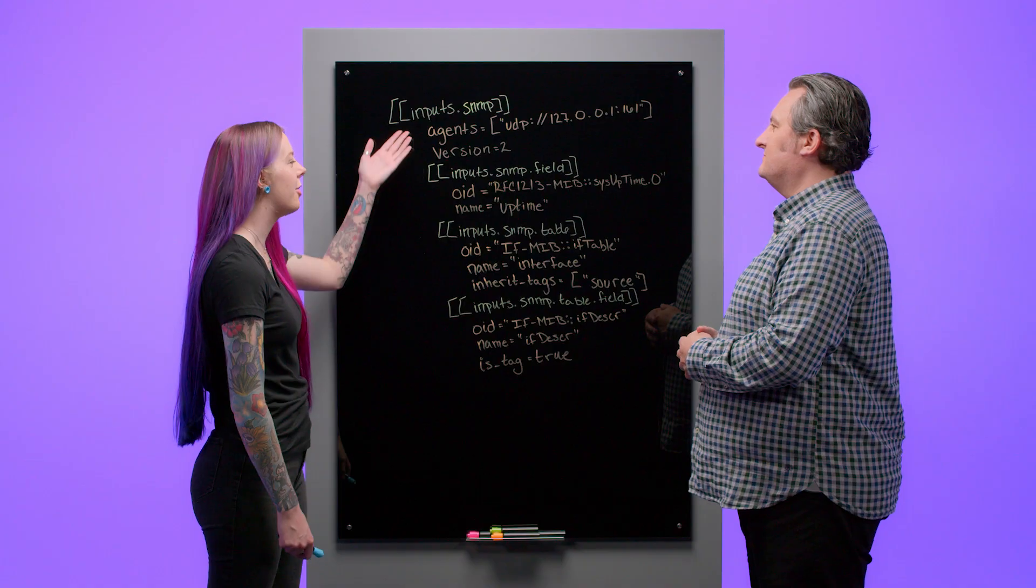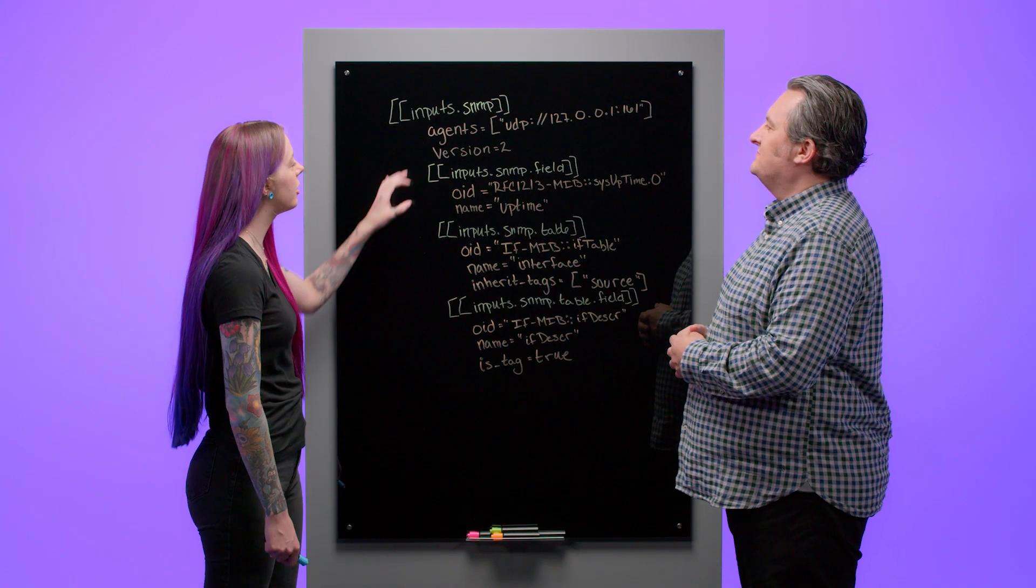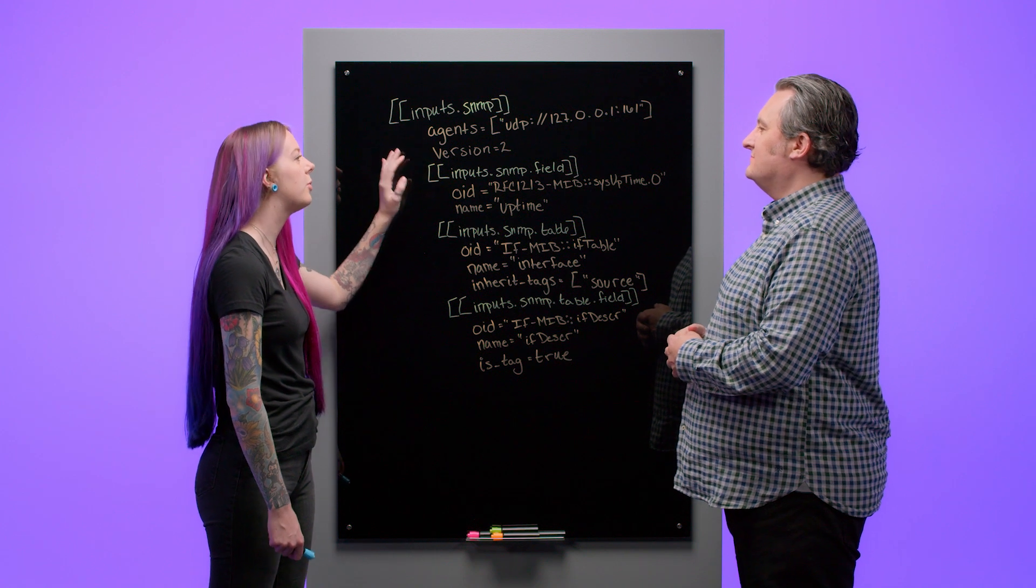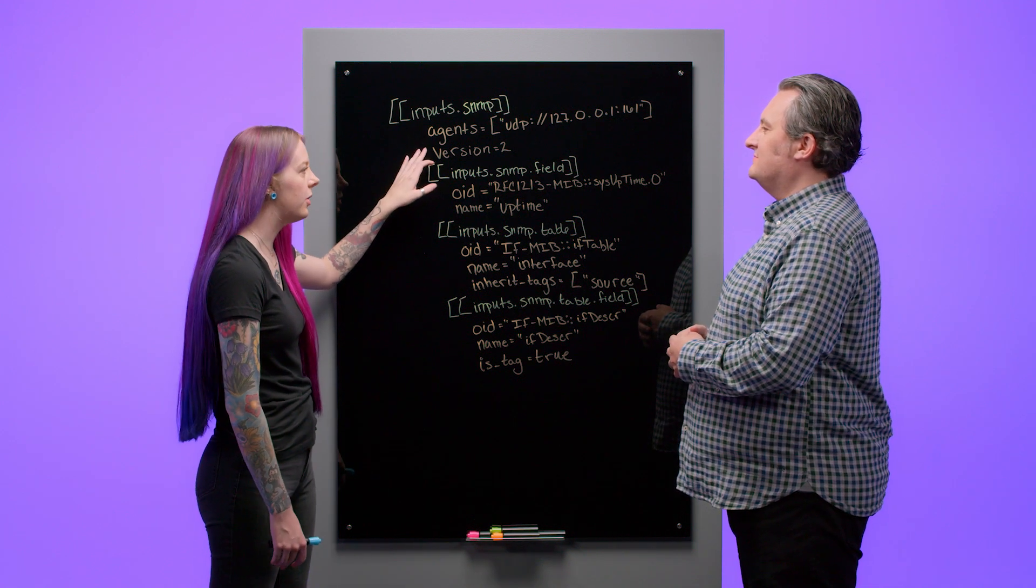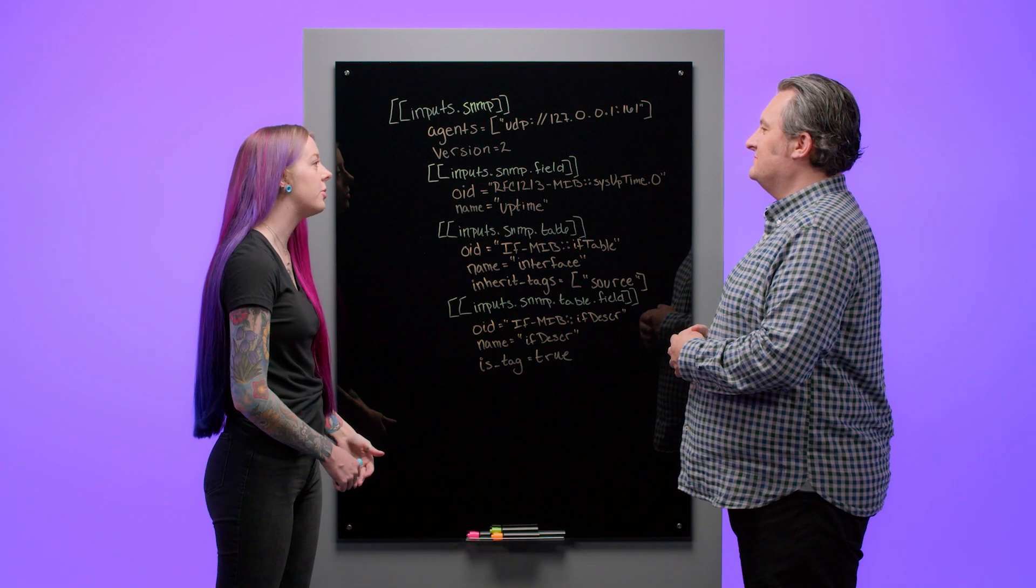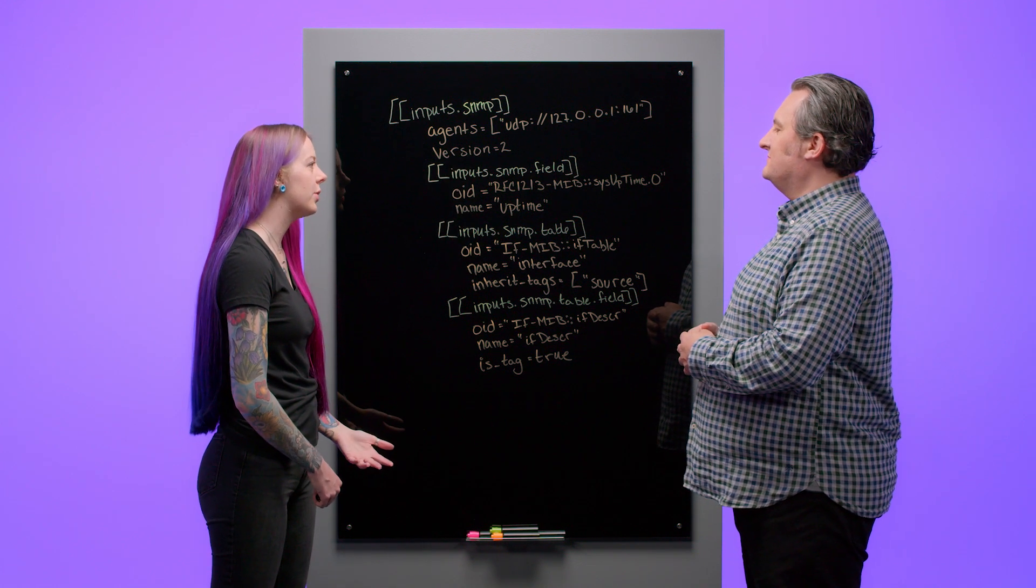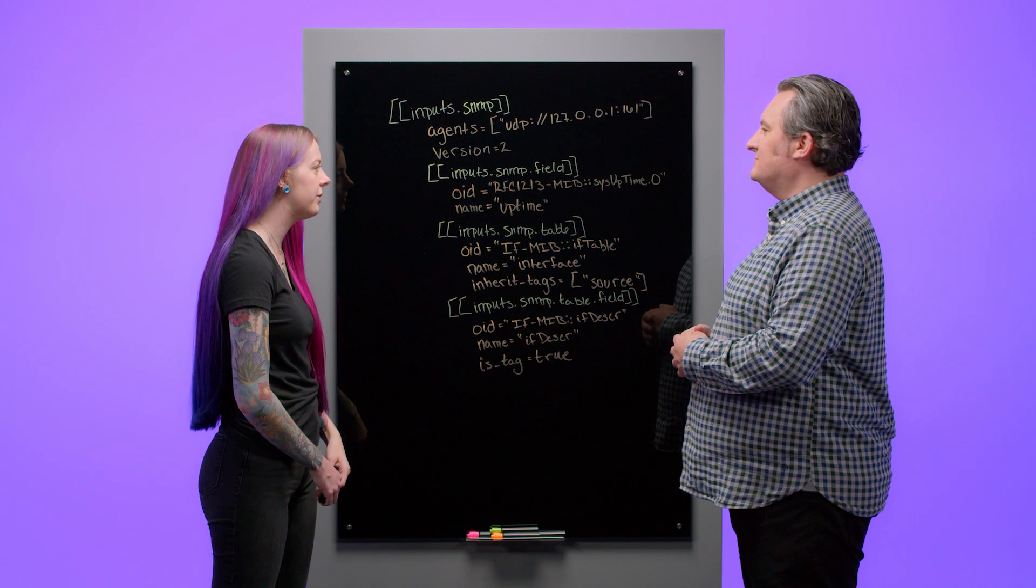So how do I configure Telegraph to connect to my SNMP devices? For SNMP, you're going to want to use our SNMP plugin. You're going to start with the agents of where your SNMP data is going to flow through. Version, which will default to version 2, but Telegraph does support 1, 2, and 3. If using 3, you will have to set up your TLS certificate.